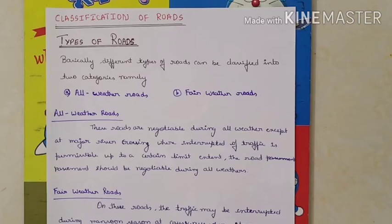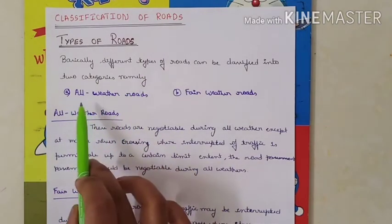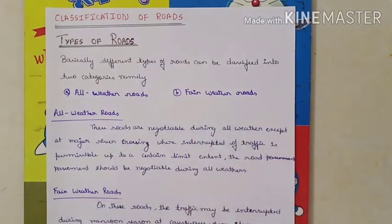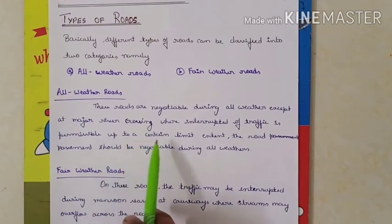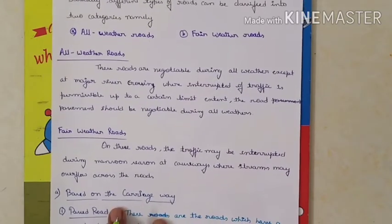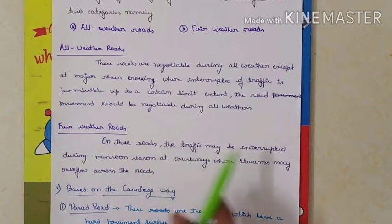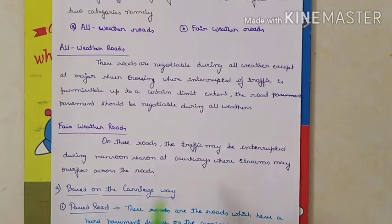Classification of roads — first, types of roads. Basically there are two categories: all weather road and fair weather road. All weather roads are negotiable during all weather except at major river crossings. Fair weather roads have traffic interrupted during monsoon season due to causeways and overflow across the roads.